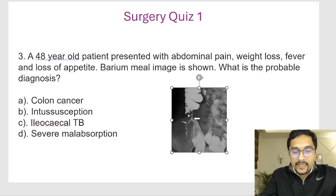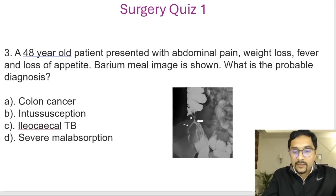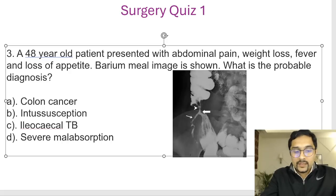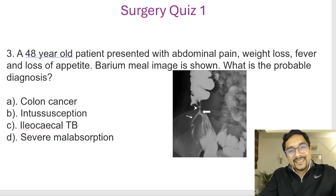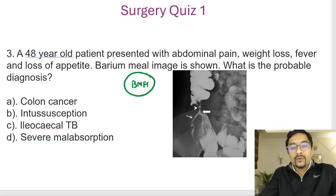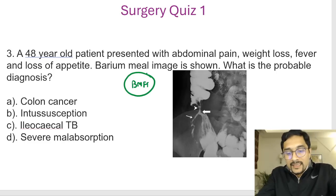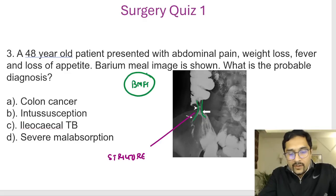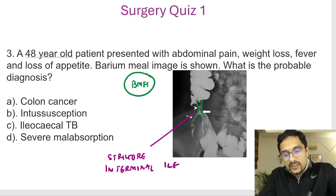The third question: a 48-year-old lady presents with abdominal pain, weight loss, fever, and loss of appetite. A barium image is shown — what is the probable diagnosis? This is a barium meal follow-through (BMFT), which is good for the small bowel and ileocecal junction. You can see the ileocecal junction with a narrowing or constriction — there is a stricture in the terminal ileum.